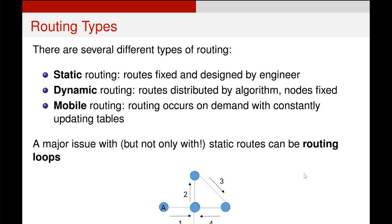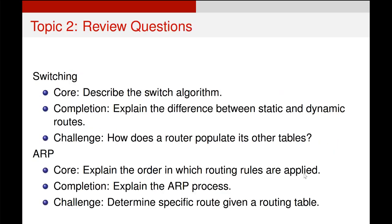We used to do a lot of static routing where routes were fixed and designed and optimized by an engineer. Practically, that was very difficult and limited who could use networks. So now we use dynamic tools for routing like DHCP, which is the topic of another video, which dynamically assigns IP addresses and routes. And the more up-to-date version of that is mobile routing, which deals with mobile devices.